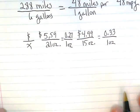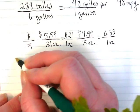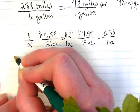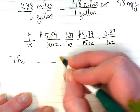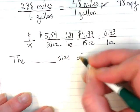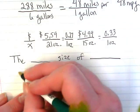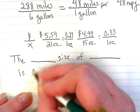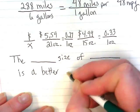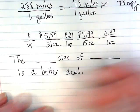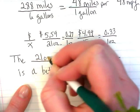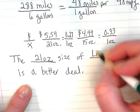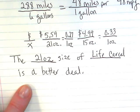Yeah. And this is how you guys are going to write this on your paper. You're going to have to identify what you had. So you're going to say the blank size of blank is a better deal. And what would I fill in on this? Which size of the Life Cereal is a better deal? The 21 ounce size of Life Cereal is a better deal.